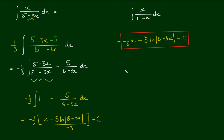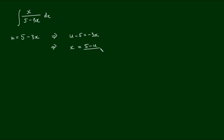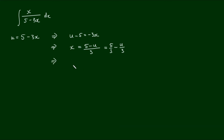Let's check if this answer is correct by trying a different approach. So again for the integral of x over 5 minus 3x, let's use the substitution method where we let u equal the denominator, which is 5 minus 3x. If we rearrange that, we get u minus 5 equals negative 3x. Making x the subject, we have x equals 5 minus u all over 3. Taking the derivative of x, the first term goes to 0 and we're left with dx equals negative one third du.